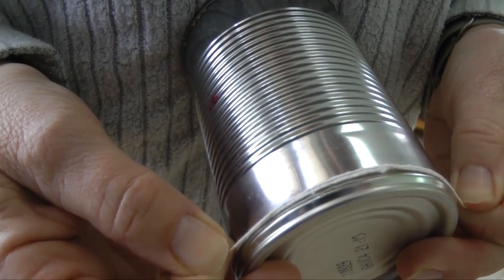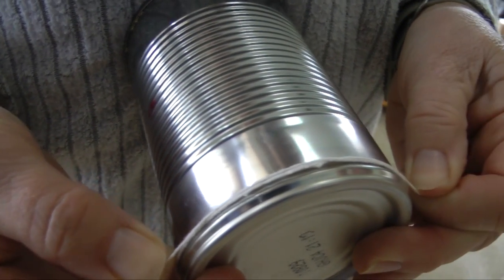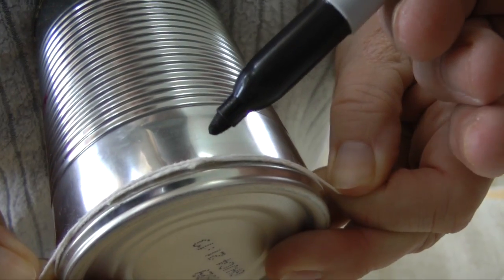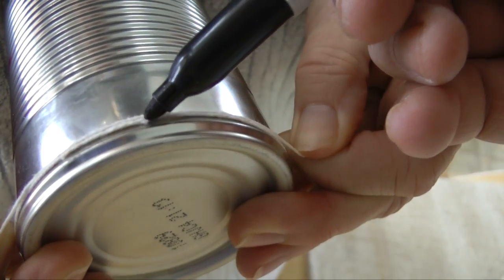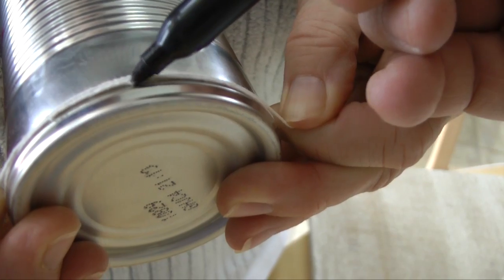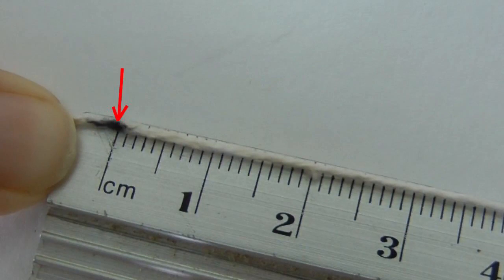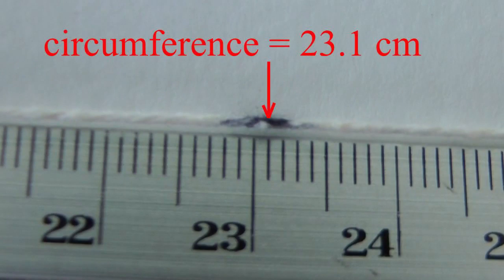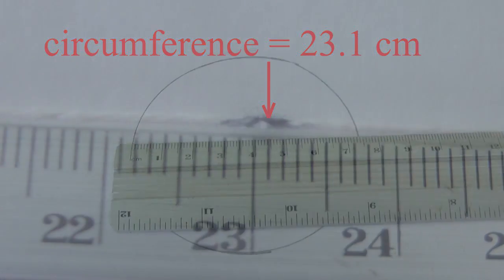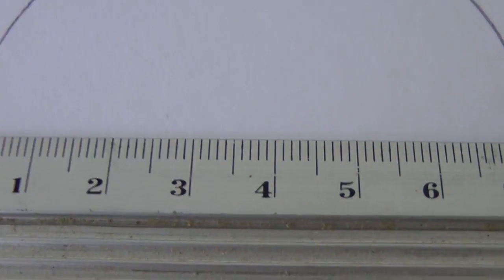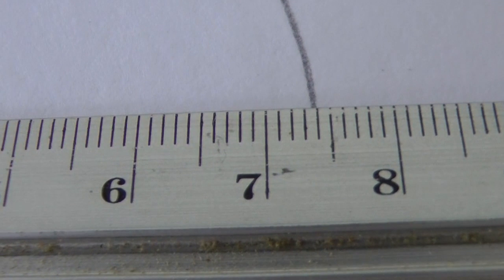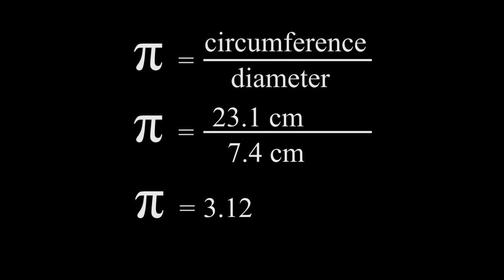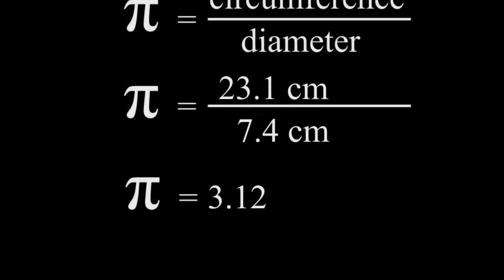To determine the circumference of the circle, wrap a string around the can and mark the overlap. Measure this length with a ruler. The diameter is the longest distance across the circle. Divide this value into the circumference, and you have an approximation for pi.